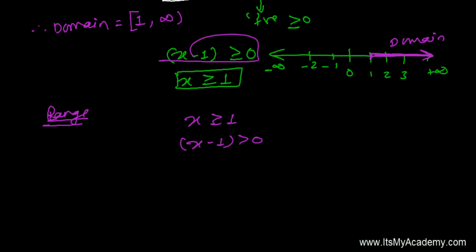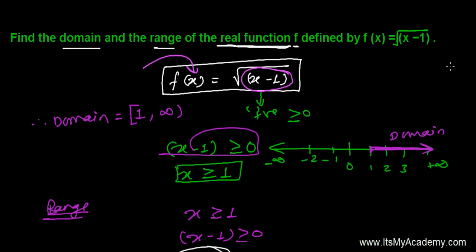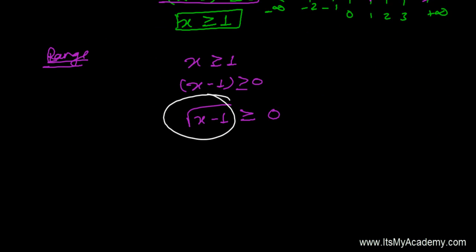So what will happen if I'm taking root on both sides? I'm going to say √(x-1) is greater than or equals to 0. Inside the root 0, I don't have to write, so it's simply 0. And what is this √(x-1)? Can anybody tell me what is this? This is my function f(x). So here f(x) is always greater than or equals to 0.